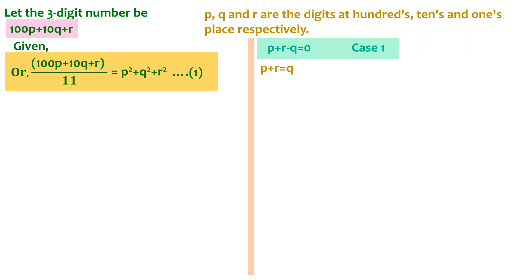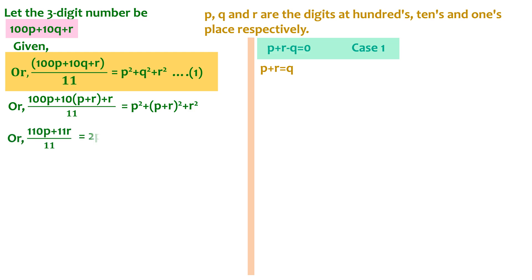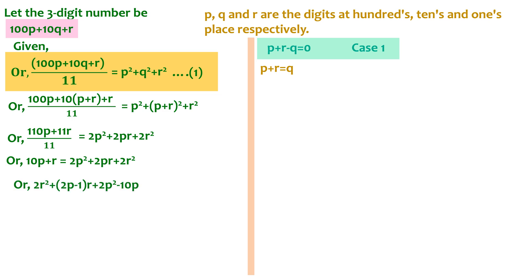We now replace the value of q with p + r in equation 1 and get (100p + 10(p + r) + r) / 11 = p² + (p + r)² + r². We go on simplifying this equation until we get a reduced form. Let this simplified equation be equation 2.